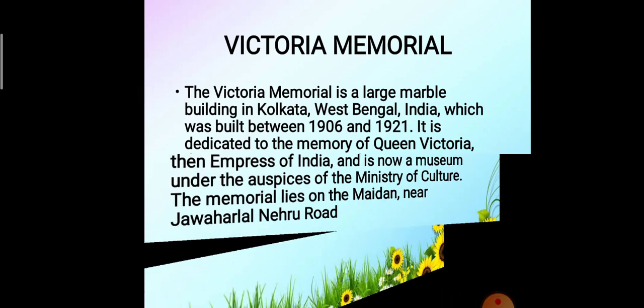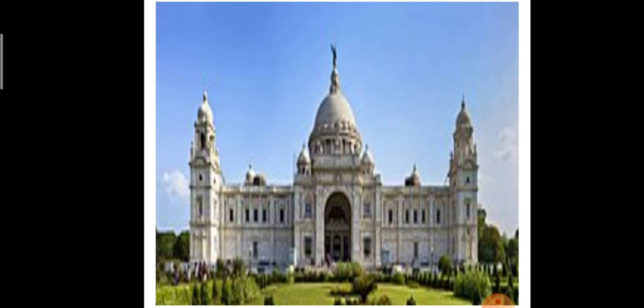The Victoria Memorial is situated in Kolkata. It was built in honor of the Monarch Queen Victoria. It is a beautiful building with beautiful gardens and lawns. The display of the museum and its architectural beauty have made it famous for tourists, with people from across the world coming to visit this place.